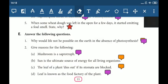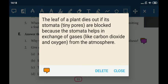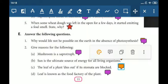The leaf of a plant dies out if its stomata are blocked. If stomata are blocked, what will happen? The leaf of a plant dies out if its stomata, which are tiny pores, are blocked because stomata helps in exchange of gases like carbon dioxide and oxygen from the atmosphere. Therefore stomata are important. If they are blocked, then plant will die.